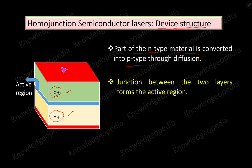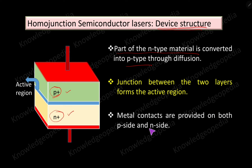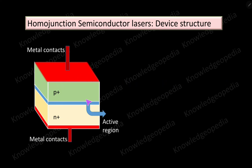After forming the junction, metal contacts are applied on both the p-side and n-side. These metal contacts are the ports through which the device can be connected to a circuit.